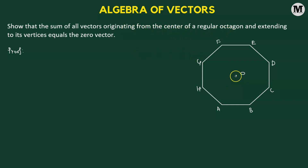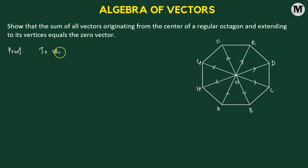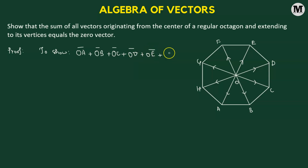We have to show that the sum of all vectors originating from center O and extending to its vertices equals zero. From O, we draw a directed line segment to A, giving vector OA. Similarly, we draw directed line segments from O to B, and six more to each remaining vertex. So our goal is to show that OA + OB + OC + OD + OE + OF + OG + OH equals the zero vector.